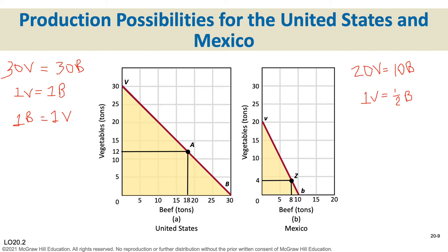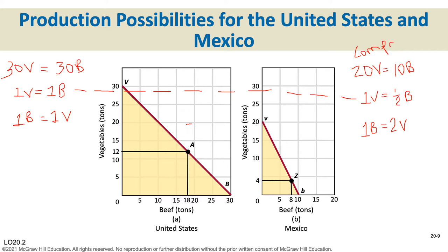To find Mexico's opportunity cost of one ton of beef, divide both sides by 10: 20 divided by 10 gives two tons of vegetables, so one ton of beef costs two tons of vegetables. Comparing: the United States must give up one ton of beef to make a ton of vegetables, while Mexico only gives up half a ton of beef. So Mexico has the comparative advantage for vegetables, since they give up less beef.